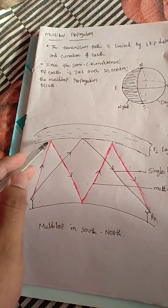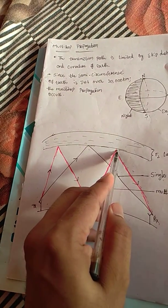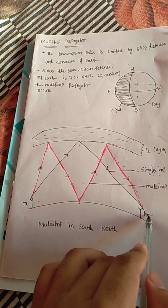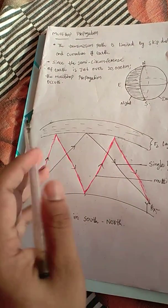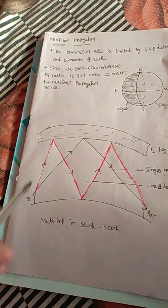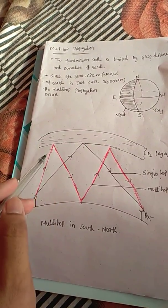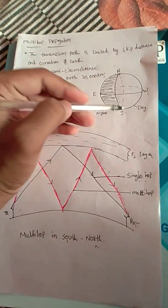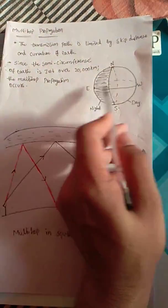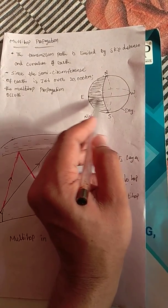In multi-hop propagation, the signal is reflected from the F2 layer, then reflects off the ground, and then reflects from the ionosphere again before reaching the receiver — reflected two times. When the signal is transmitted from south to north, the path will be either totally day or totally night. But when transmitted east to west or west to east, half the transmission area is day and half is night.